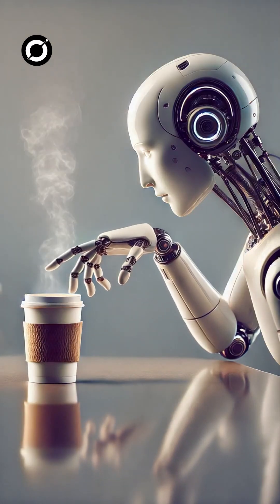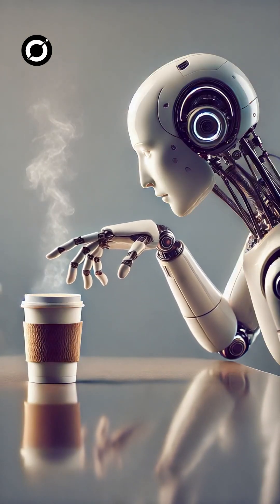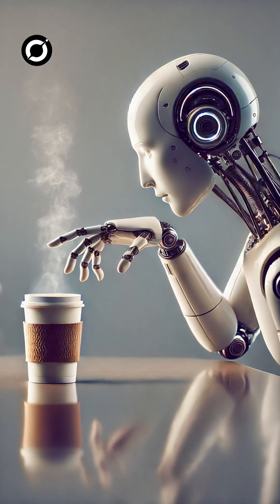For instance, if a robot touches a hot surface, it can quickly withdraw its hand to prevent damage, just like a human reflex.